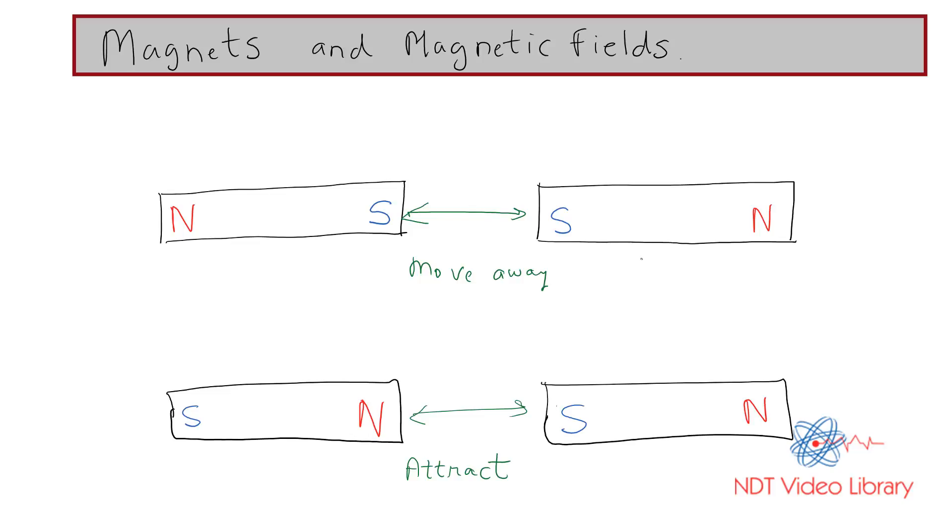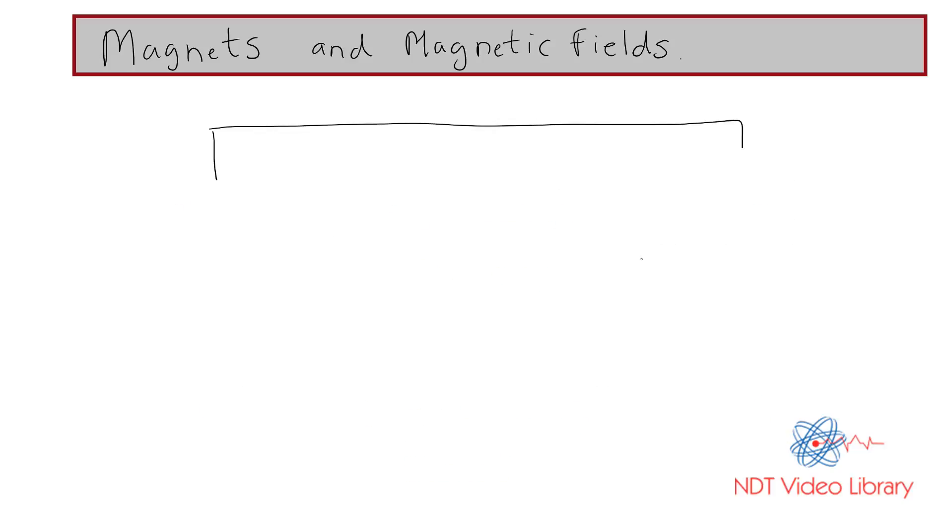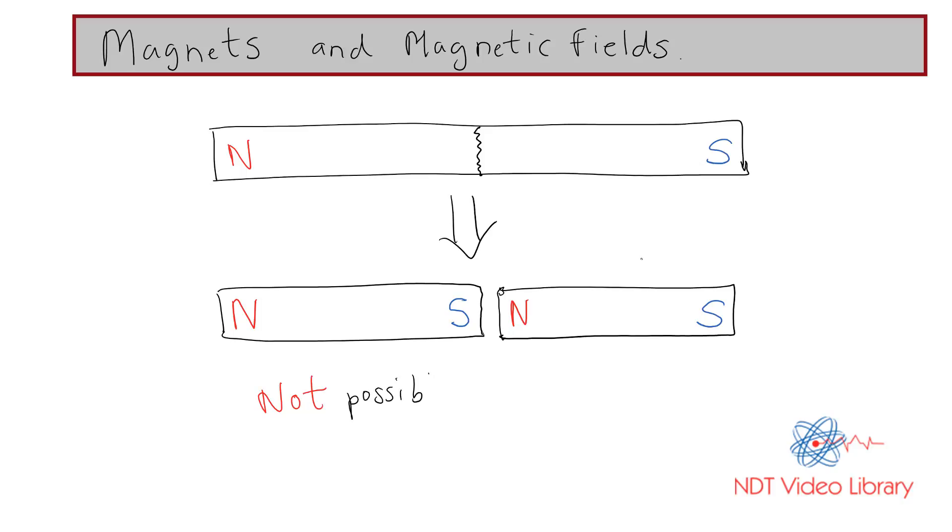Consider a big bar magnet with north and south poles on the ends. If I cut this bar magnet in the middle, will I be able to separate the two poles? What happens is two new poles are created here: south and north. So every north pole is accompanied by a south pole, and every south pole is accompanied by a new north pole. It is not possible to separate the poles.